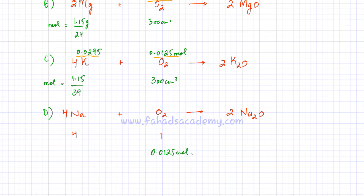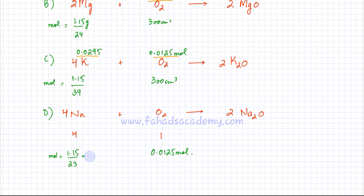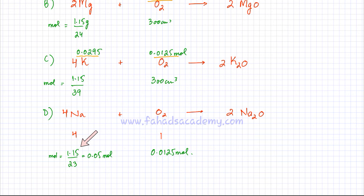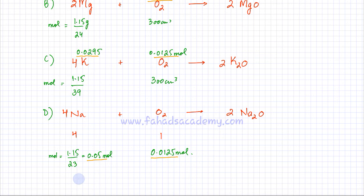We find the moles of sodium: 1.15 grams ÷ molar mass of 23 = 0.05 moles. Now checking the ratio — the equation requires sodium to oxygen in a 4:1 ratio. Multiplying 0.0125 moles of oxygen by 4 gives exactly 0.05 moles, which matches the moles of sodium calculated from the data. The ratio fits perfectly.